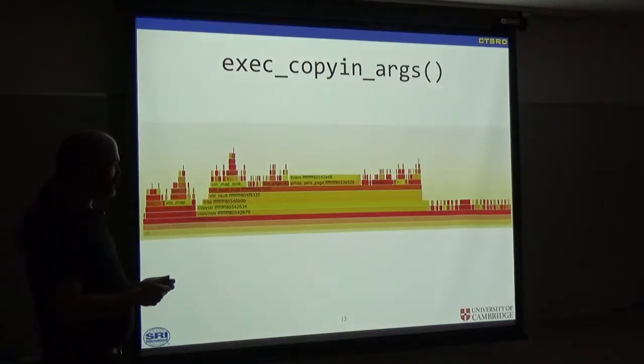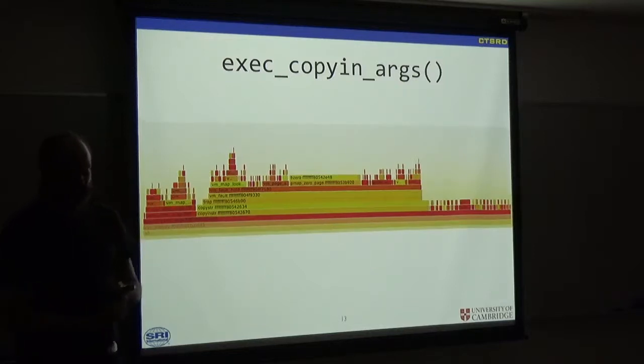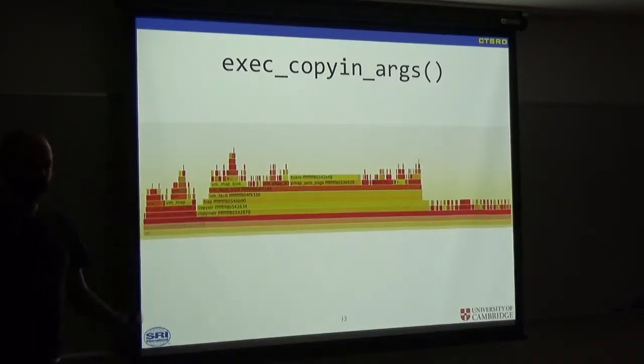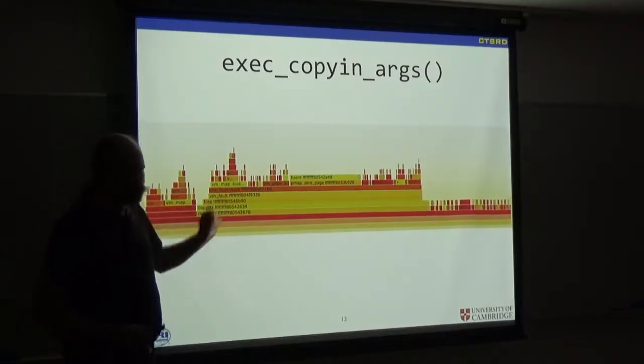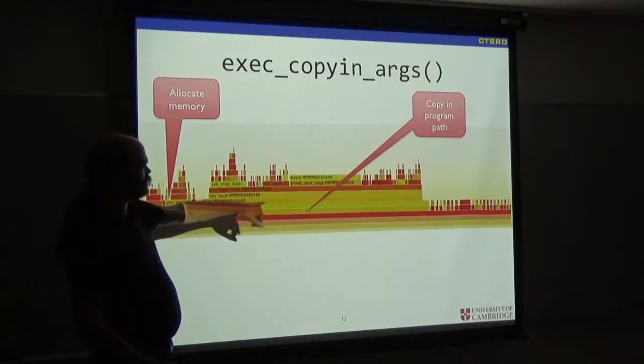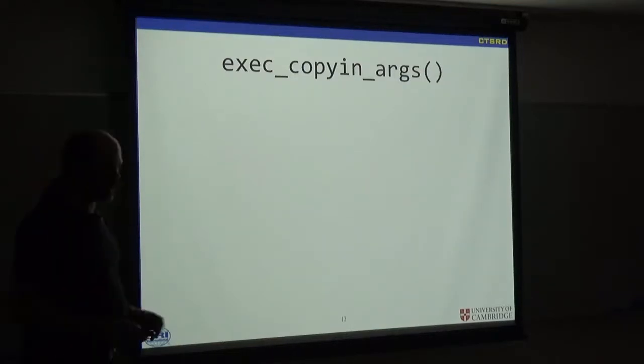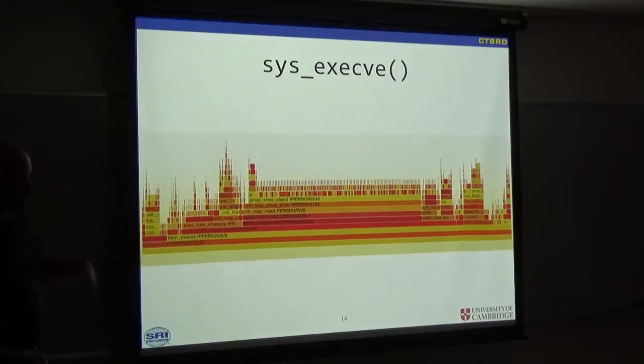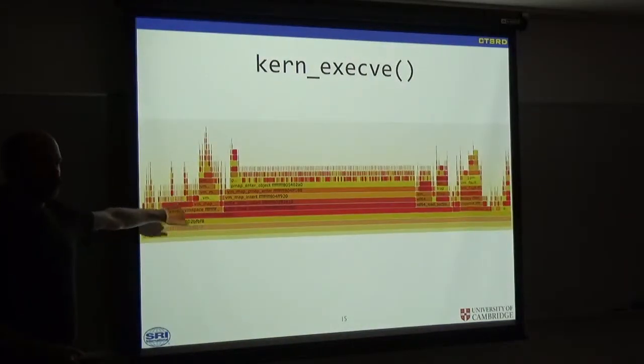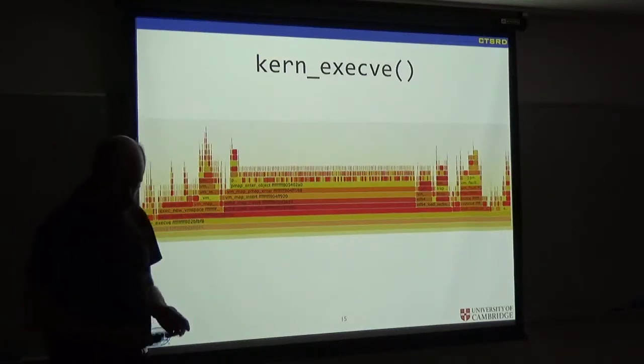We're going to start in the kernel looking at the execve and see what it does. The first thing it does is there's this exec_copy_in_args function, which takes the arguments, the environment variables, and all that were passed to the exec system call, and copies them into the kernel. So it has them all ready to go, and it can put them into the new process. It also can find the executable that needs to be loaded.